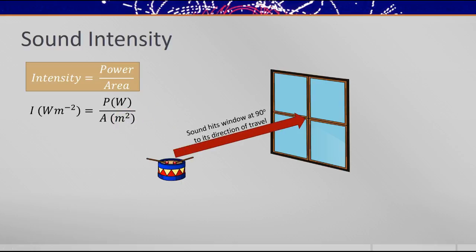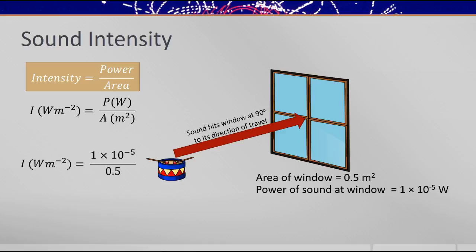If you imagine sound travels to hit a window, if we know the area of the window and the power of the sound that passes through that window, we could work out the intensity of that sound by dividing the power by the area. So intensity is a measure of loudness for us. Our ears pick up intensity and measure that rather than measuring the power. It turns out intensity is proportional to loudness in some way.